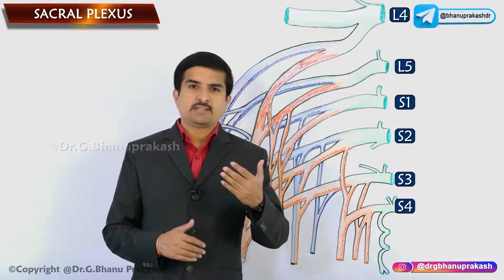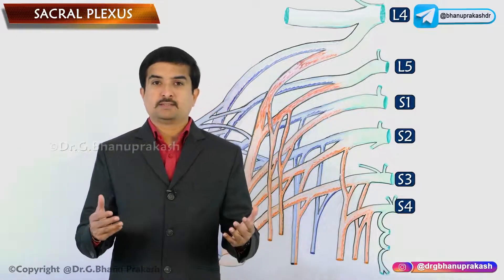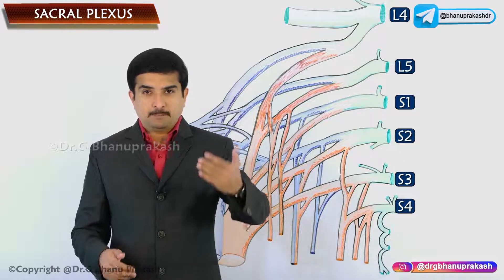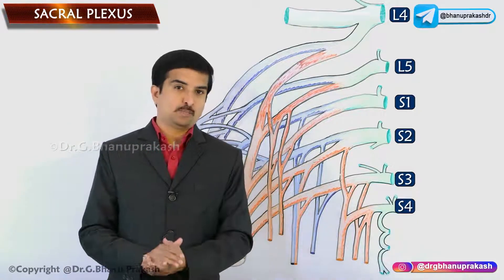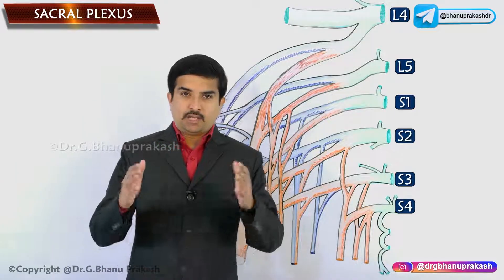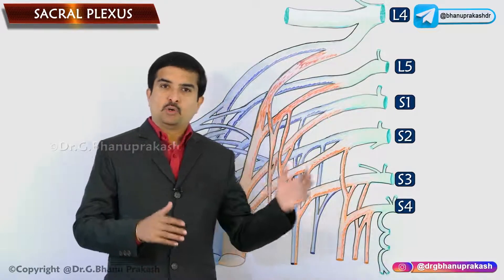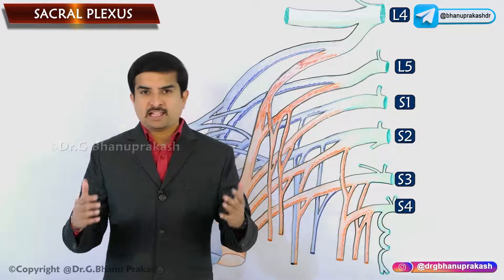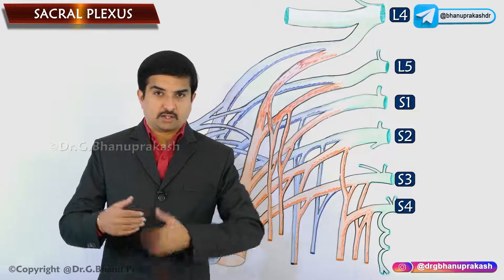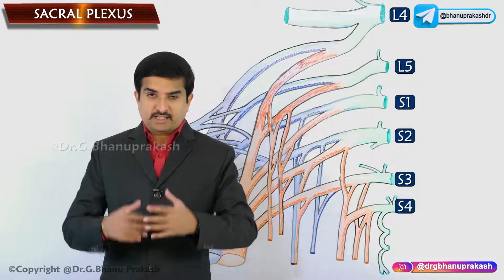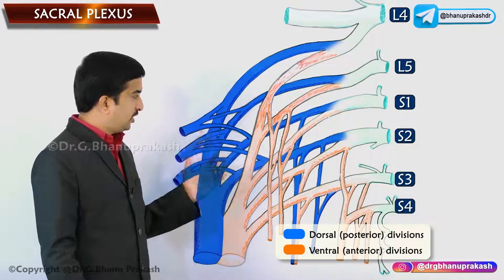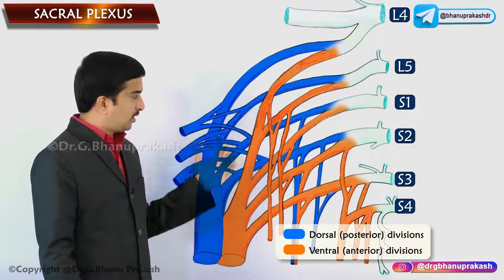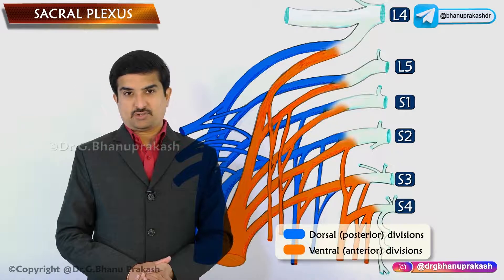It lies in front of the piriformis, deep to the pelvic fascia, in the posterior wall of the true pelvis. L4, L5, S1, S2, and S3 ventral rami divide into dorsal (posterior) and ventral (anterior) branches.